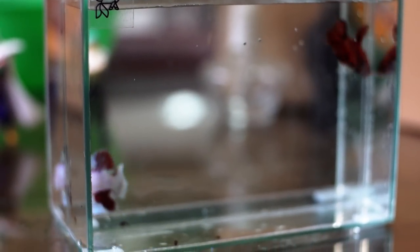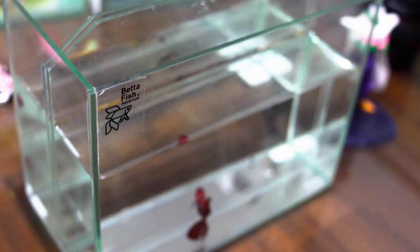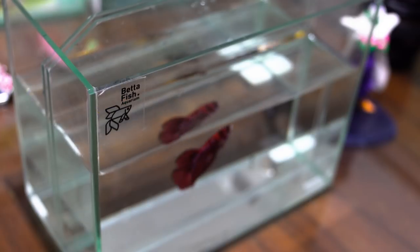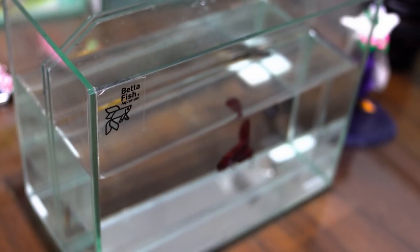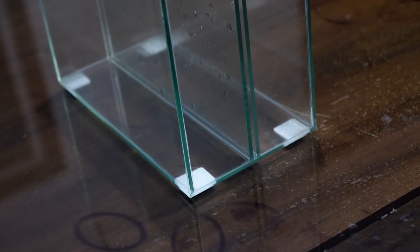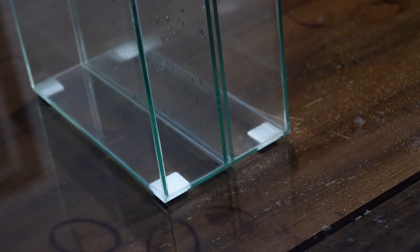Lalu, yang gue perhatiin adalah, ini lem-lemannya luar biasa rapi ya. Luar biasa rapi, nggak ada yang bleber, nggak ada yang lompat sana-lompat sini lemnya. Memang ada beberapa bagian yang lemnya itu ada di kaca tengah, cuman itu minor banget yang bisa gue bersihin pakai silet.